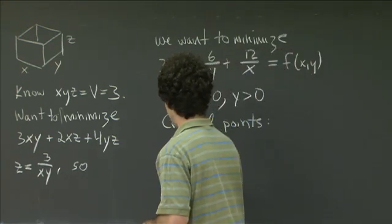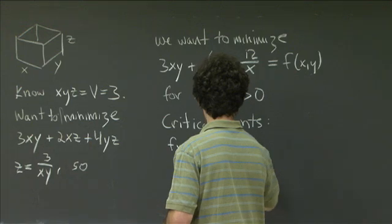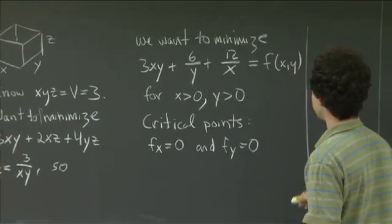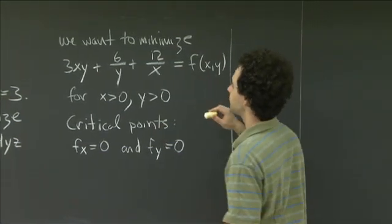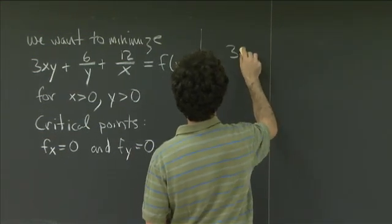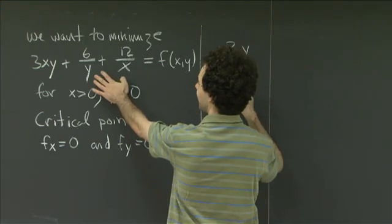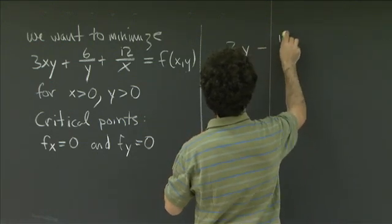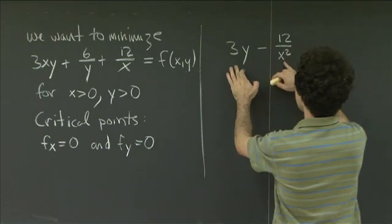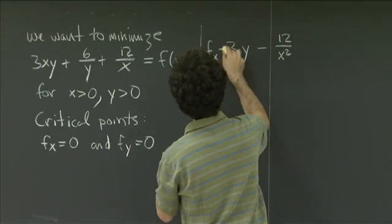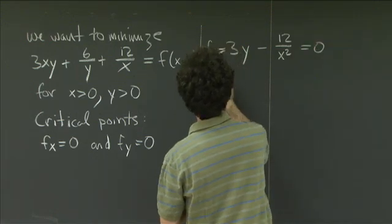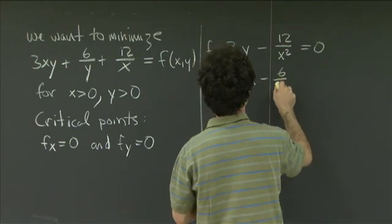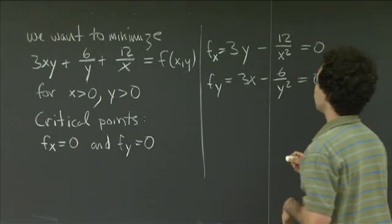So what is fx? Taking the partial derivative: fx = 3y + 0 − 12/x². We need that equal to 0. And fy = 3x − 6/y², and we also need that equal to 0.